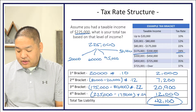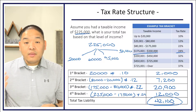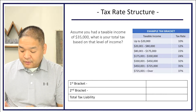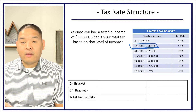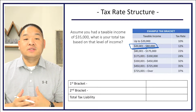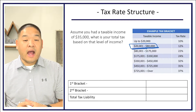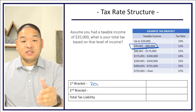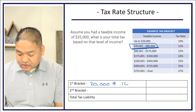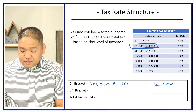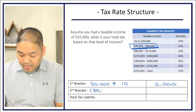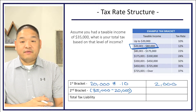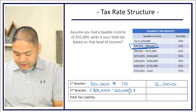Let's do one more example for practice. Our next example is $35,000 of taxable income. At $35,000, we fall within the 12% bracket. We're not going to use the tax table here — we want more practice using the tax brackets directly. The first bracket is $0 to $20,000. Since $35,000 exceeds $20,000, we take the full $20,000 times 10%, which gives us $2,000. Then for the second bracket, $35,000 minus $20,000 equals $15,000 remaining.